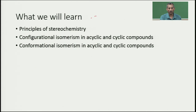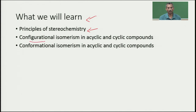In this module, we will mainly look at the various principles of stereochemistry. We will also study how to assign configurational isomerism in acyclic and cyclic compounds, and how conformational isomerism exists in cyclic and acyclic compounds.